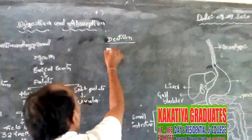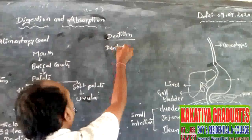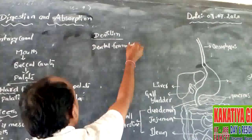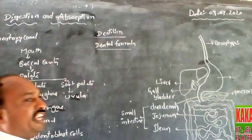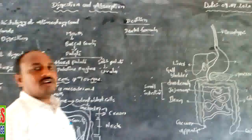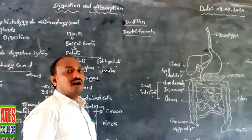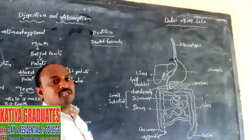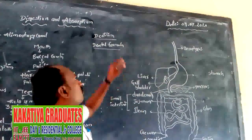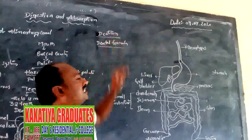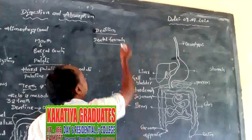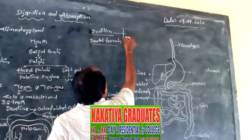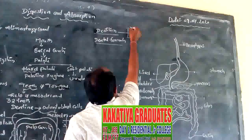Now we discuss human dentition and dental formula. The arrangement of the teeth in the jawbones is called dentition. Human dentition is categorized into three types.